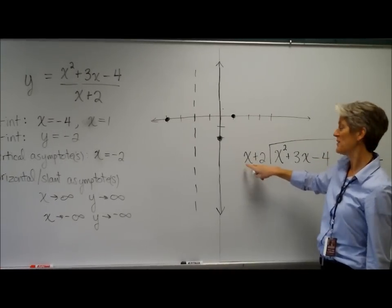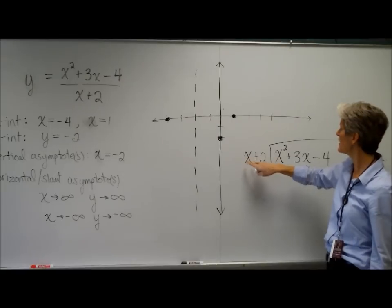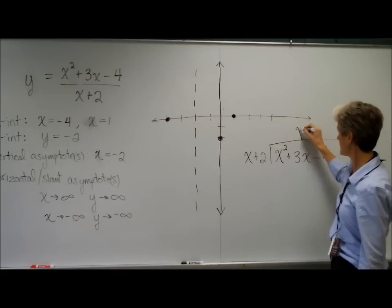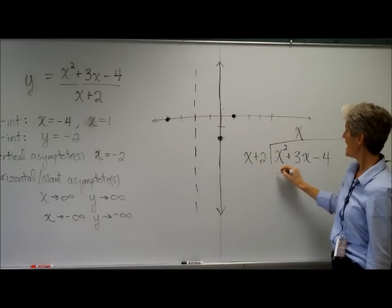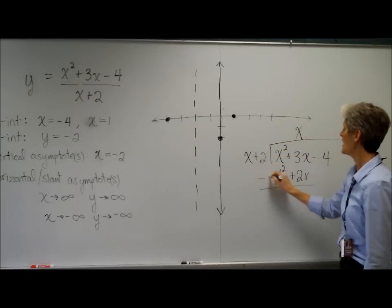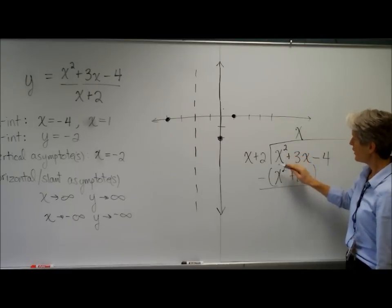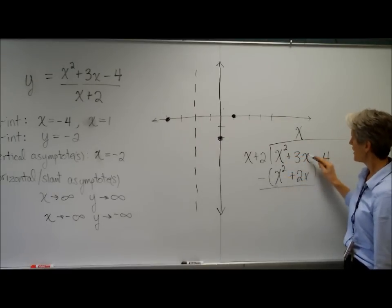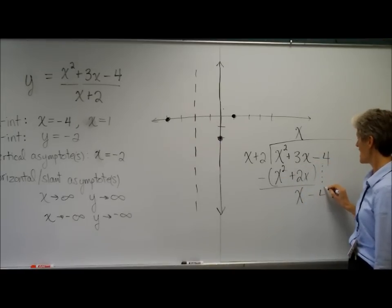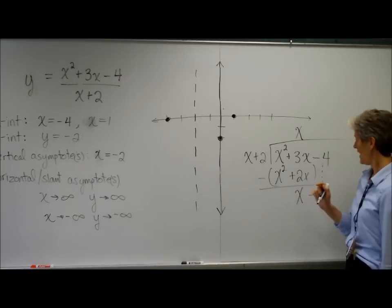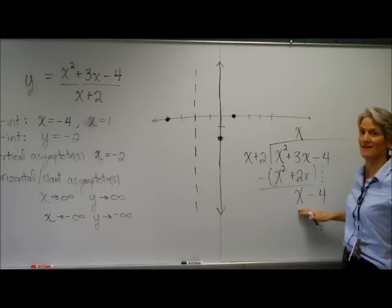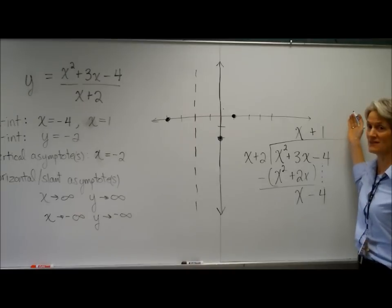So remember the way we talked about this, the x. We only look at that x and ask ourselves, x times what equals this x squared? x times x. We'll do that. Now I take that x, multiply it by x. x times 2 plus 2x. And I subtract. By design, those things go away. Boom. 3x minus 2x gives me my 1x. Bring down the next little guy.